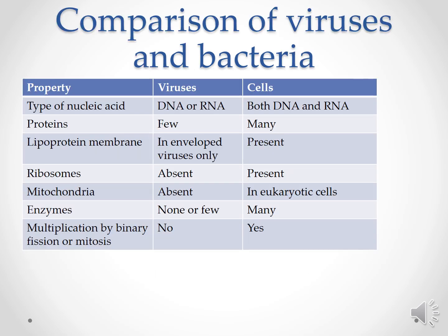Comparison between a virus and a bacteria. When comparing the properties, we can see that the type of nucleic acid in a virus is DNA or RNA, while bacteria have both DNA and RNA. Viruses have few proteins, bacteria have many. Regarding lipoprotein membrane: viruses have an envelope only, and envelopes are present. Ribosomes are absent in viruses but present in bacteria.